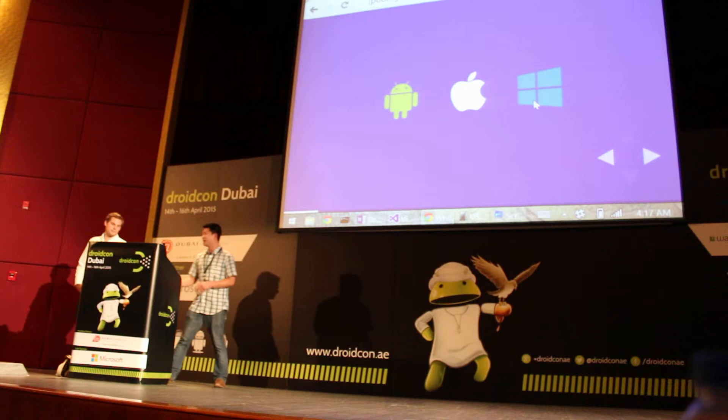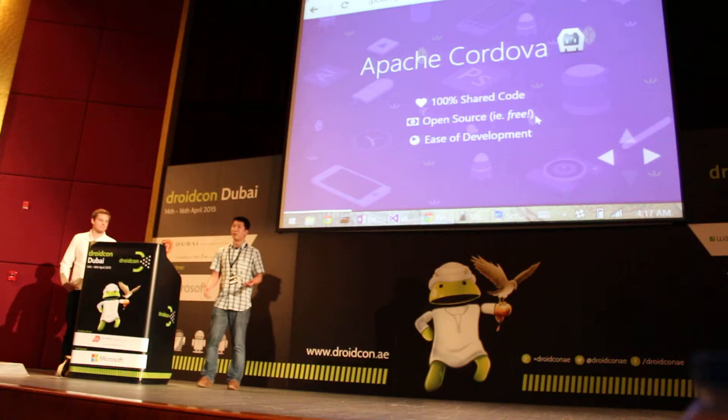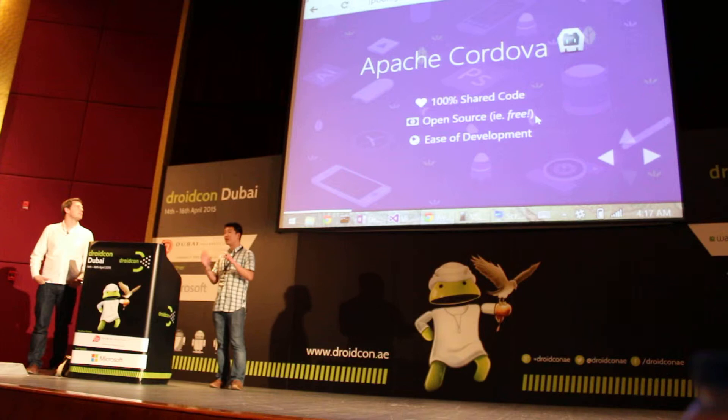The goal of Apache Cordova is 100% shared code. You write all your tooling in a web framework — HTML, CSS, and JavaScript — and in that scenario you get 100% shared code. Apache Cordova is completely free and open source as an Apache project.